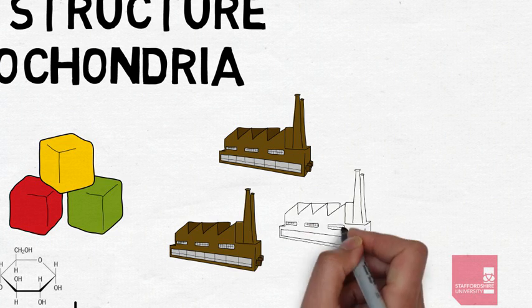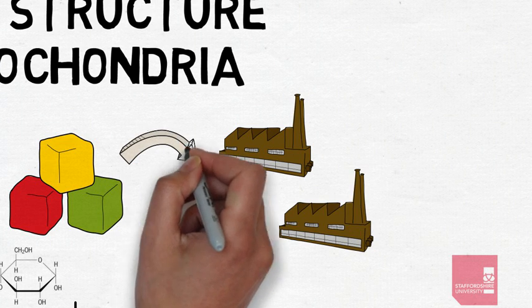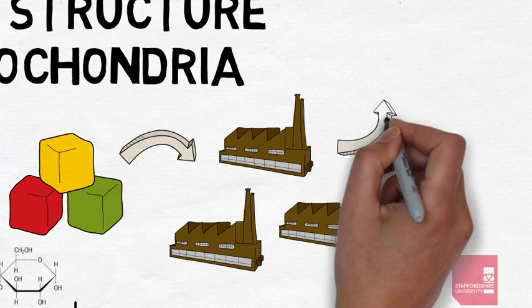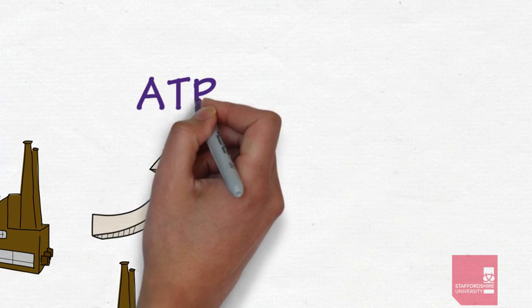Think of the mitochondria as tiny factories, factories that take in these small building blocks and churn out large amounts of a molecule called ATP, or adenosine triphosphate.